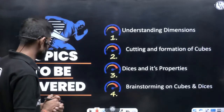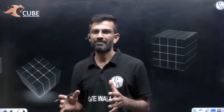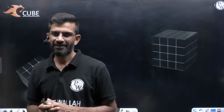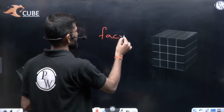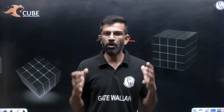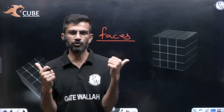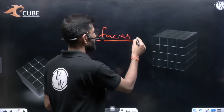Let us start with cubes. The room where you are sitting and watching the class, or the place where you will write the exam, that room will definitely be in the form of a cube or cuboid. Whether it is a cube or cuboid, what are the dimensions we have to understand? First, how many faces will be there in the cube? Faces — the walls, ceiling, and floor — all four walls, ceiling, and floor: that is 6. A cube consists of 6 faces.